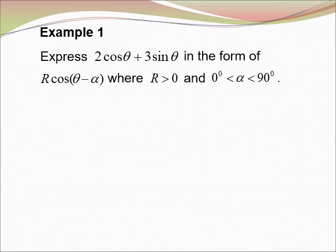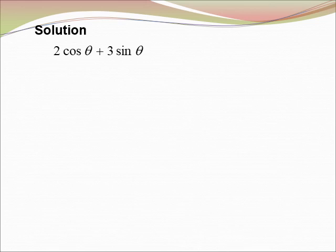Example 1: Express 2 cos θ + 3 sin θ in the form R cos(θ − α), where R > 0 and α is between 0° and 90°. We let 2 cos θ + 3 sin θ = R cos(θ − α).